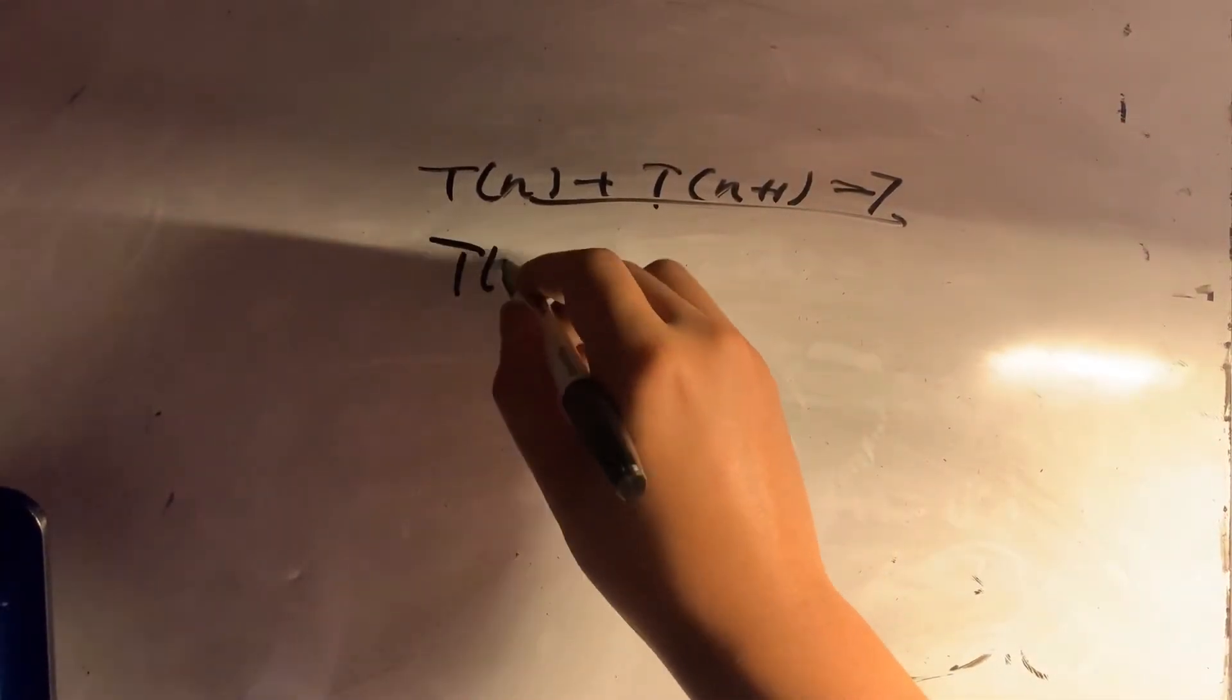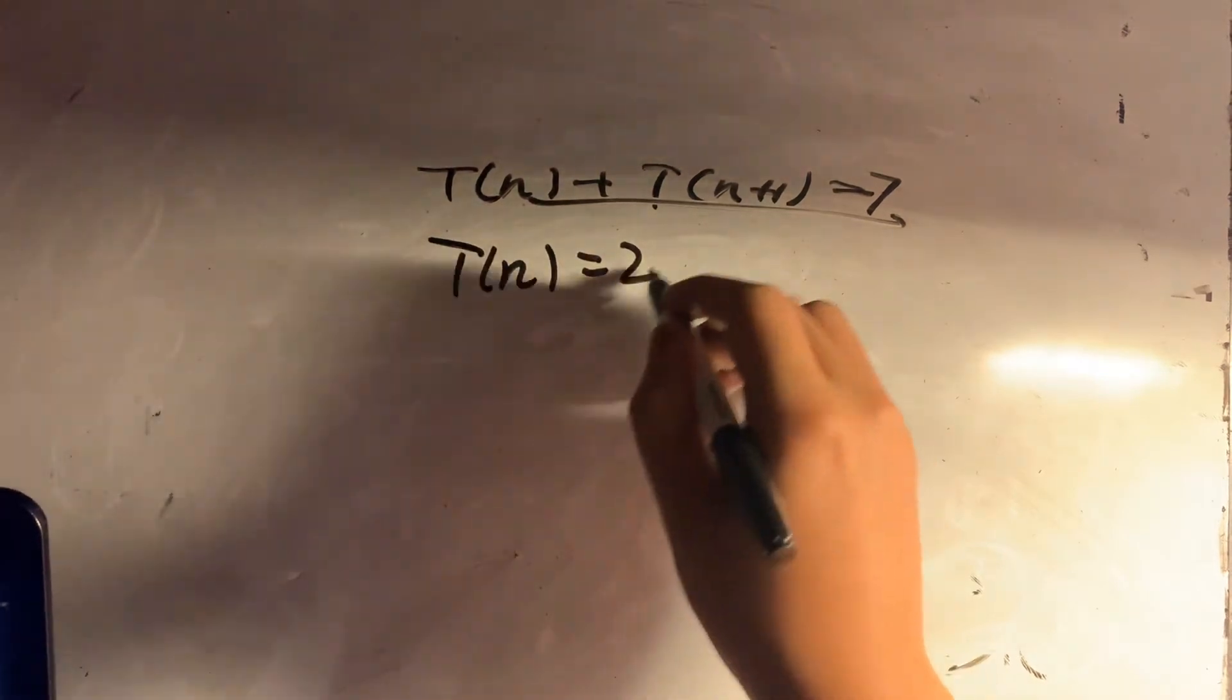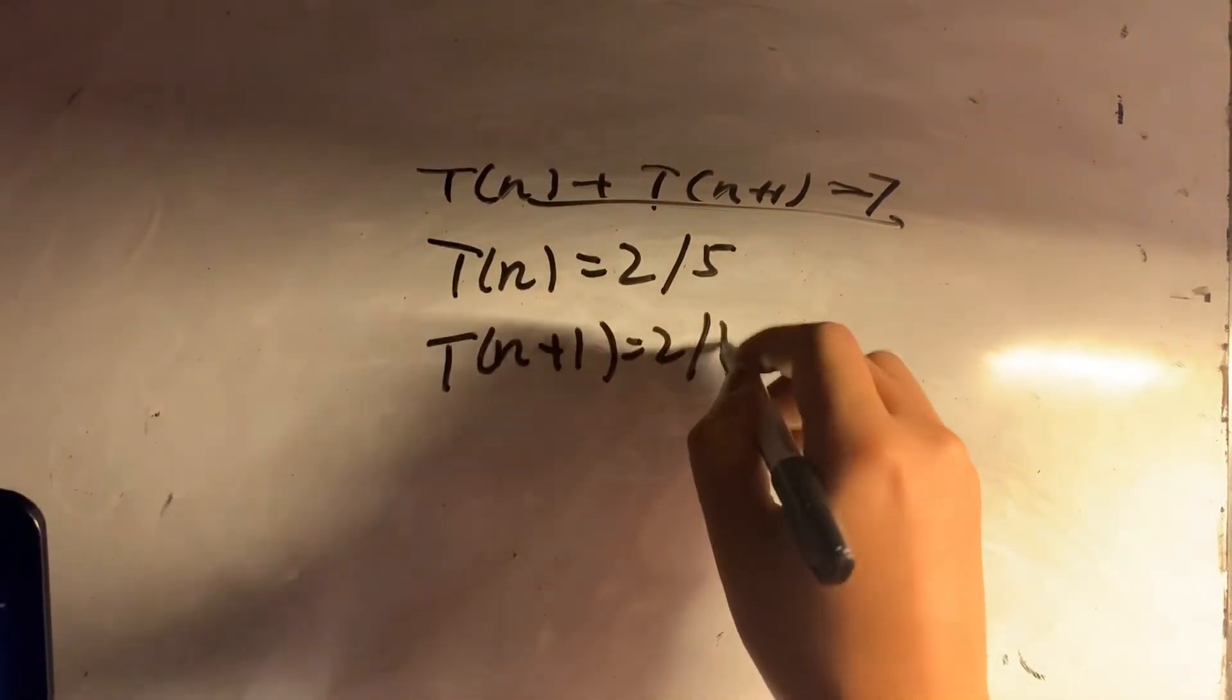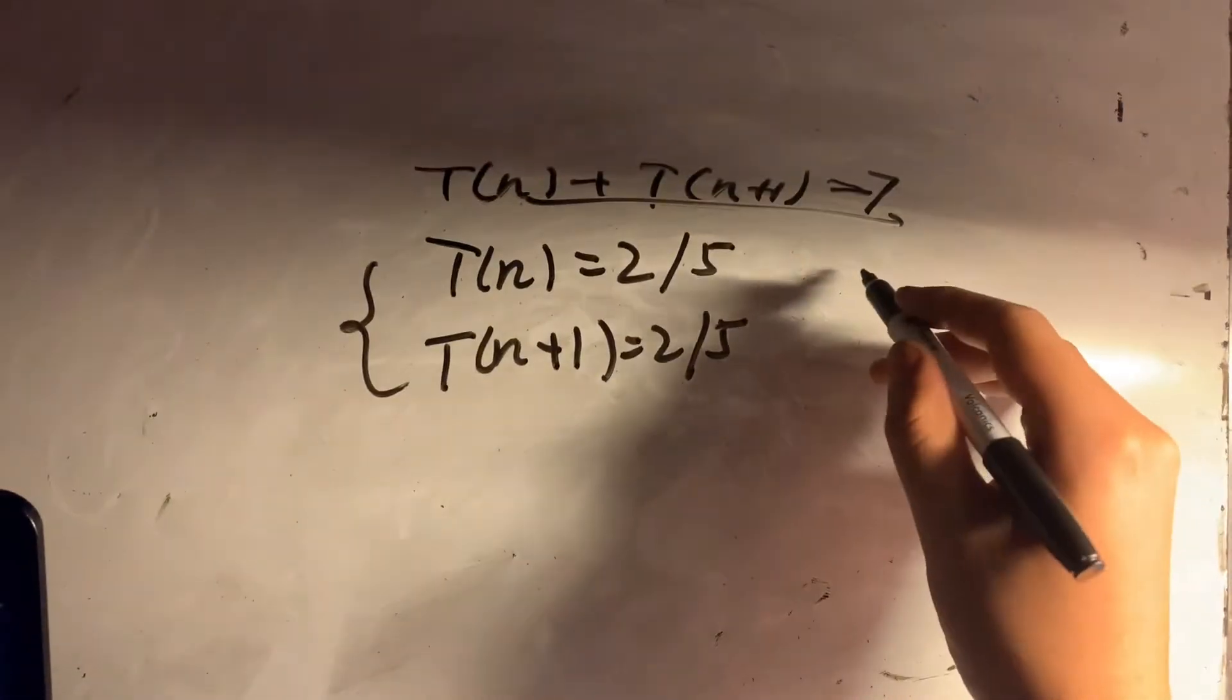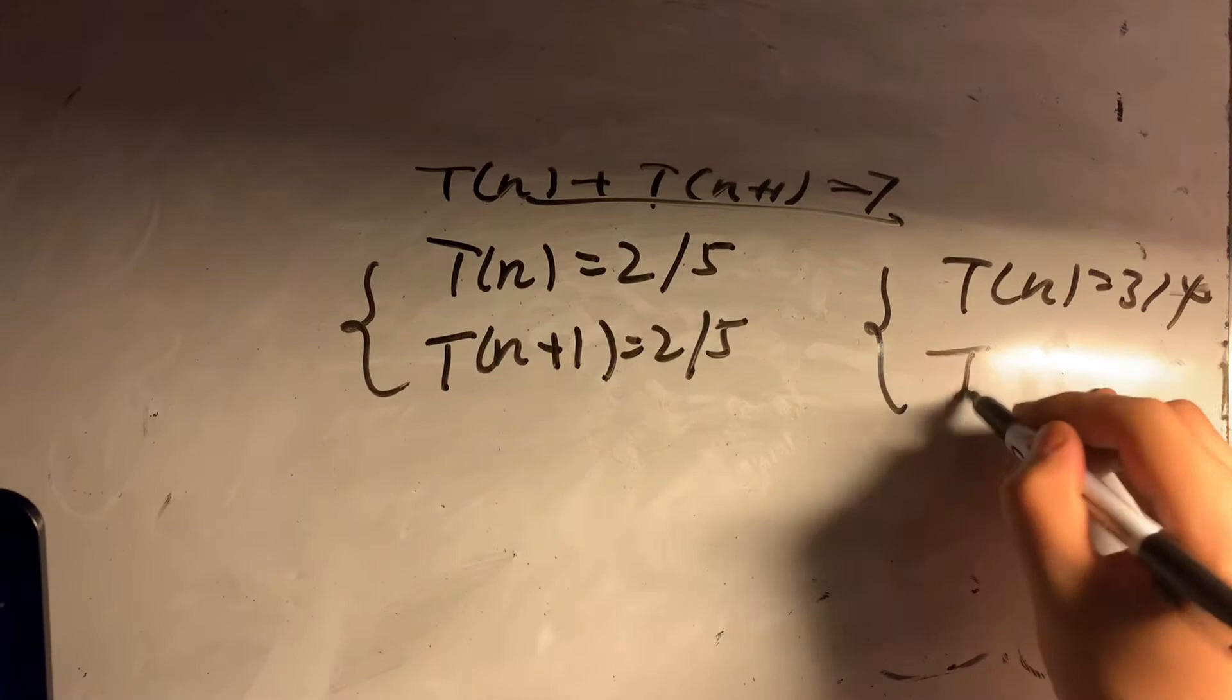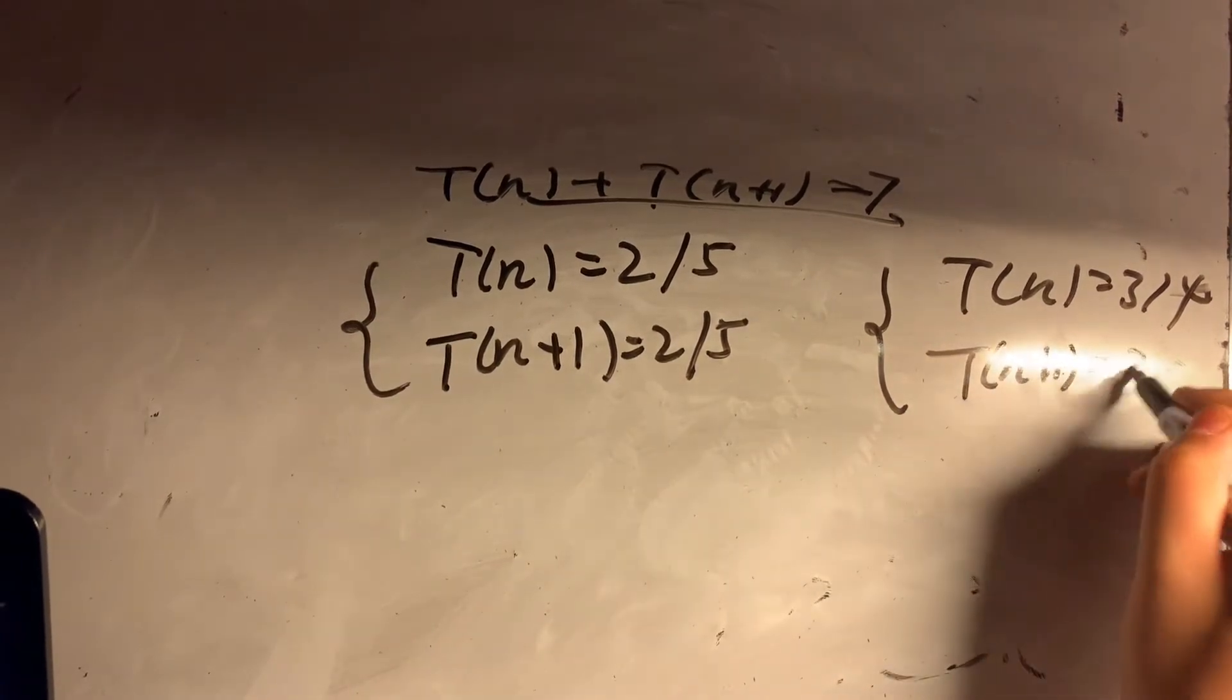So we know that there's only two cases. Solution 1: T(n) is equal to 2 or 5, and T(n+1) is equal to 2 or 5. Solution 2 is T(n) is equal to 3 or 4 and T(n+1) is equal to 3 or 4.